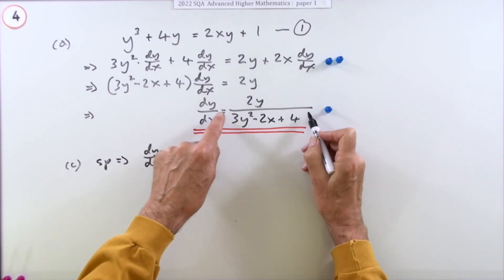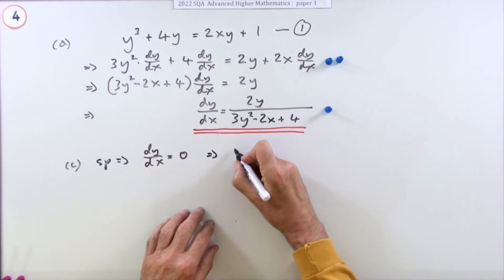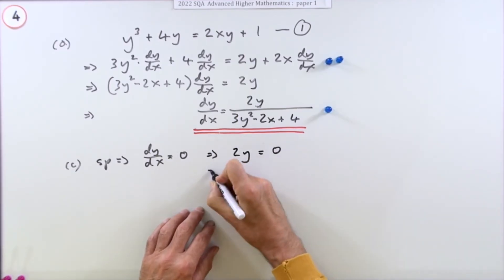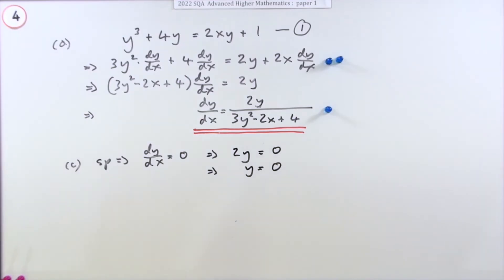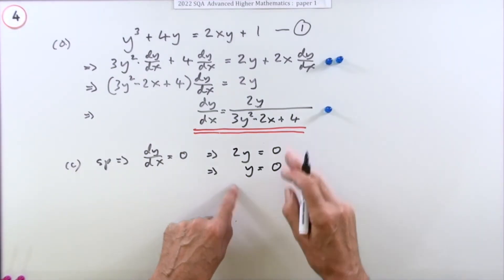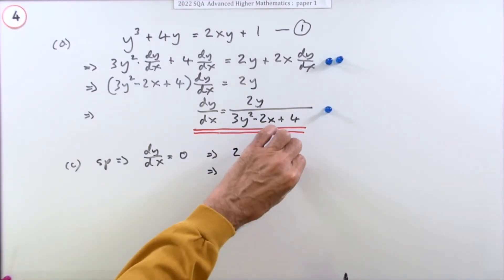If there's a fractional expression equal to zero, it's sufficient for the numerator to equal zero. That means the y coordinate must be zero. Now I need to find the x coordinate. There's a mark for getting y equals zero.